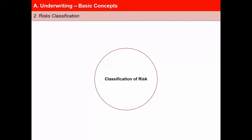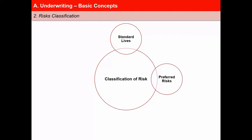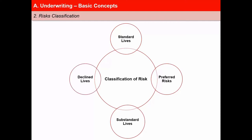There are four such risk classes. First are standard lives — those whose anticipated mortality corresponds to the standard lives represented by the mortality table. Second is preferred risks — those whose anticipated mortality is significantly lower than standard lives and hence can be charged a lower premium. Third is substandard lives — those whose anticipated mortality is higher than average but are still considered insurable. And fourth is declined lives — those whose impairments and anticipated extra mortality are so great that they cannot be provided with insurance coverage at an affordable cost.